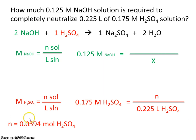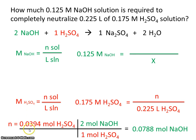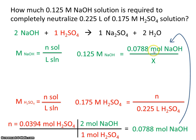We want to add base to this solution until we've neutralized it. Looking at the coefficients, they are 2 to 1 — meaning if we want to neutralize one mole of acid, we have to add two moles of base. So we multiply by the conversion factor using the coefficients from the balanced equation. This gives us the required moles of base, which we plug back into the molarity equation for the base.